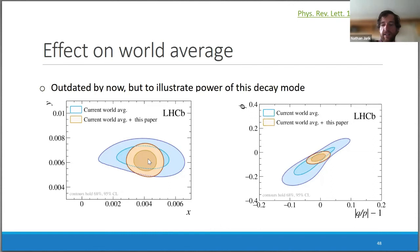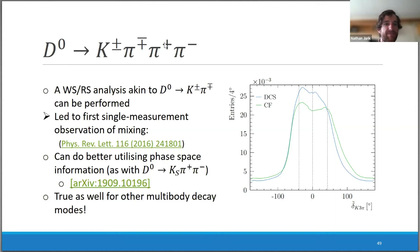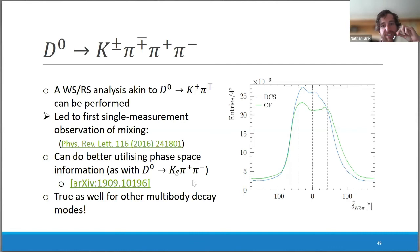This illustrates the power of this decay mode — showing the world average before and after this result, where it almost completely dominates the uncertainty on x. This technique of analyzing multi-body decays in regions of phase space can also be applied to D→K3π, for which a binning scheme and measurements of strong phases have been proposed and which will also provide nice constraints on mixing and CP violation parameters.